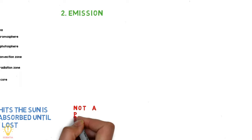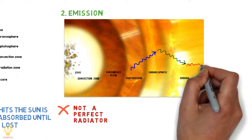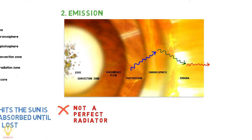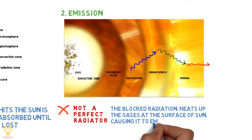Considering the emission of radiation, the Sun is not a perfect radiator. The Sun has an atmosphere of atoms, ions, and the occasional molecule which absorb some of this outgoing radiation. The absorption by various atoms and ions blocks part of the outward flow of radiation. The blocked radiation heats up the gases at the surface of the Sun.